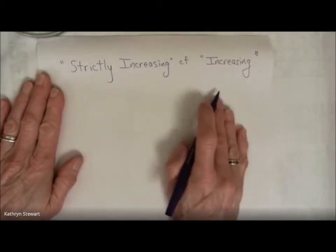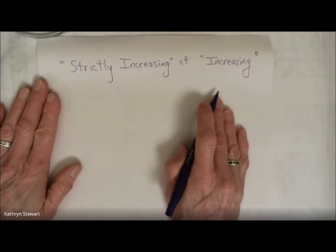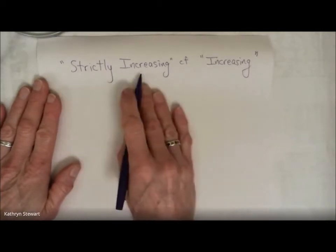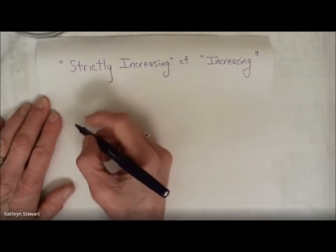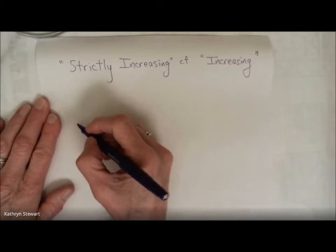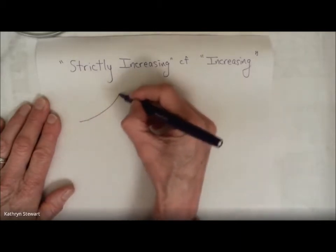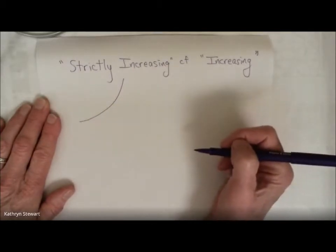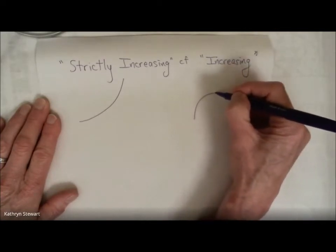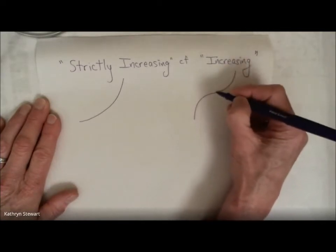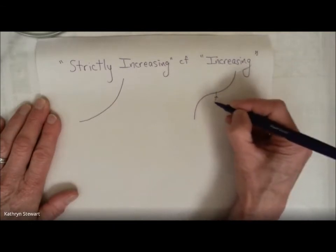So let's just talk about one little detail that you may encounter at some point in your life. There's a term strictly increasing versus just increasing. Strictly increasing means that literally the slope of a function is always positive. Increasing means the slope of a function is positive, but there could be a moment or even moments when the slope or the derivative is zero.